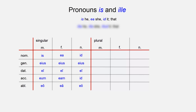For the plural: the masculine nominative is e, the feminine eai, and the neuter ea. The genitive plural for the masculine is eorum, feminine earum, and the neuter eorum.